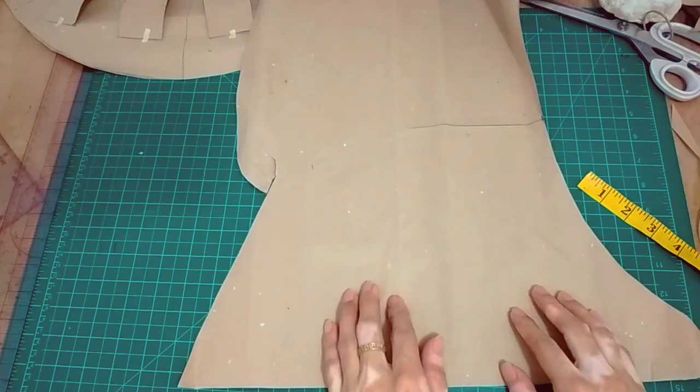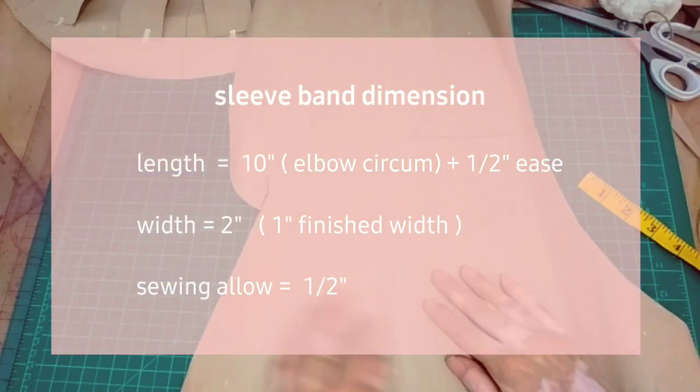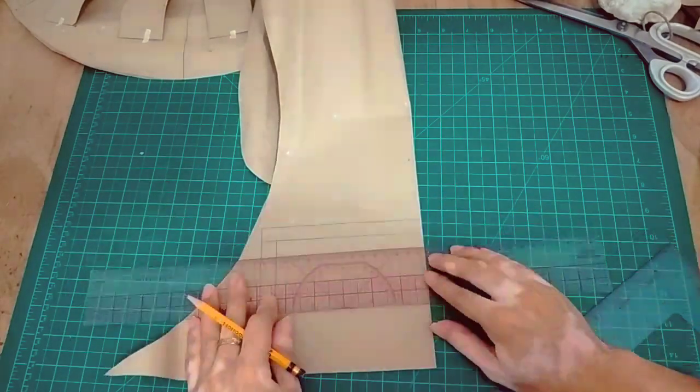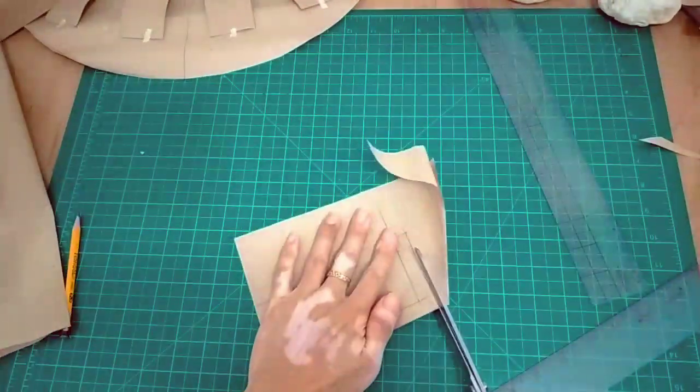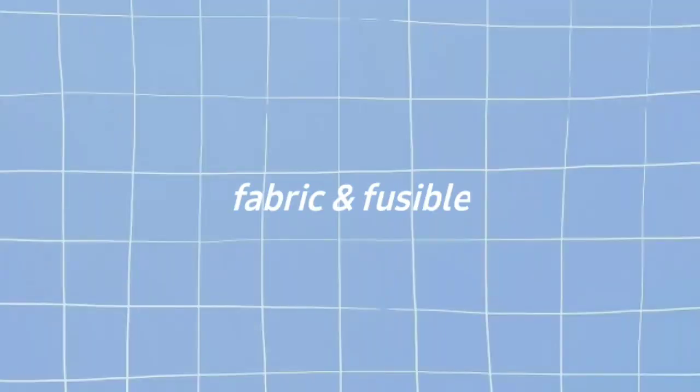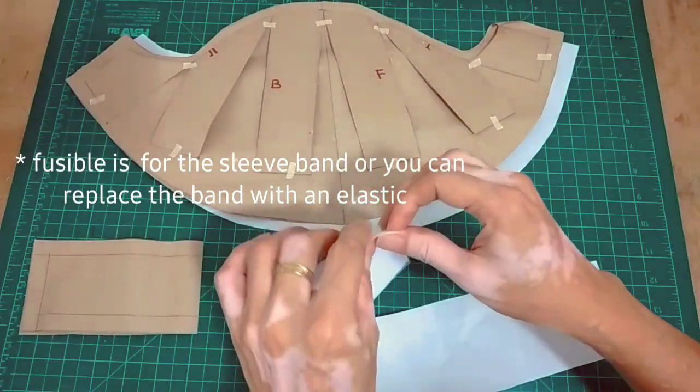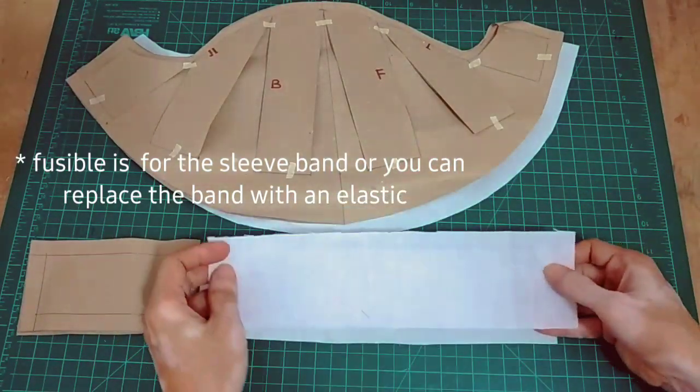Next is the sleeve band. This is the dimension for the sleeve band: you will need your elbow circumference plus 1.5 ease. You will need fusible para dun sa ating sleeve band.